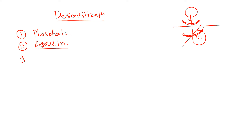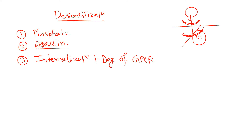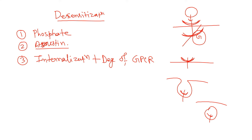The third step is internalization and degradation of GPCR. Because GPCR is present in the membrane, what the cell can do is engulf this receptor inside and then degrade the GPCR, so that no surface GPCR receptors are found to even initiate the pathway. This process forms vesicles inside the cell, and within those vesicles the G protein-coupled receptor can degrade.